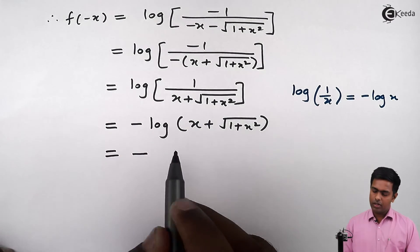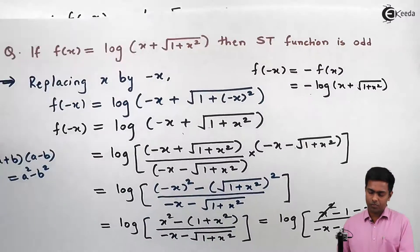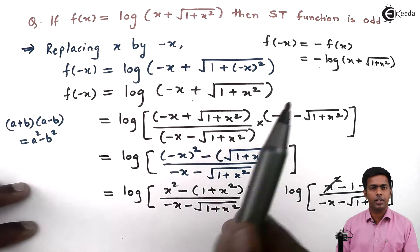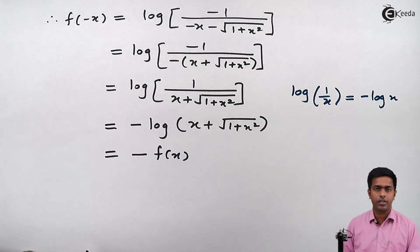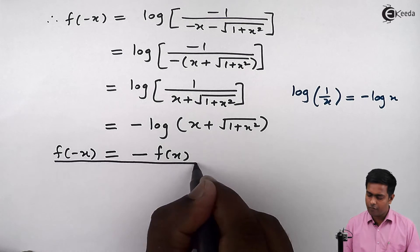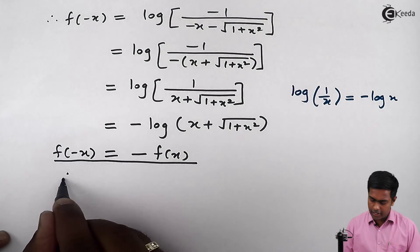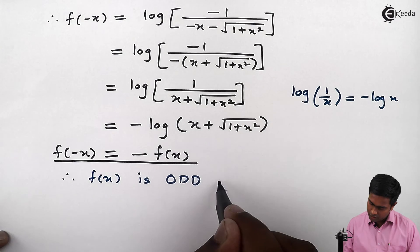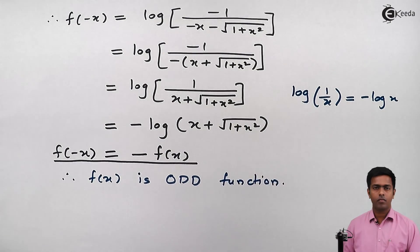Now we apply the logarithm formula log(1/x) = -log(x), where the denominator term is our x. So we get minus of log of (x plus root of 1 plus x squared). This term is exactly f(x) from our question, so this equals -f(x). We have shown that f(-x) = -f(x), and hence f(x) is an odd function. Thank you.